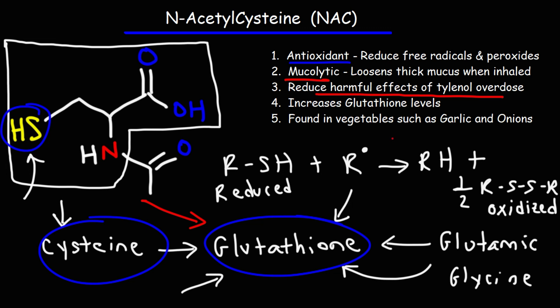NAC is found in vegetables such as garlic and onions. Garlic has a lot of other sulfur-based compounds as well, such as allicin, ajoene, diallyl sulfide, diallyl disulfide, and diallyl trisulfide. There are so many interesting and different types of sulfur-based compounds found in garlic. N-acetylcysteine is one of them, and there's also S-allyl cysteine in garlic as well.